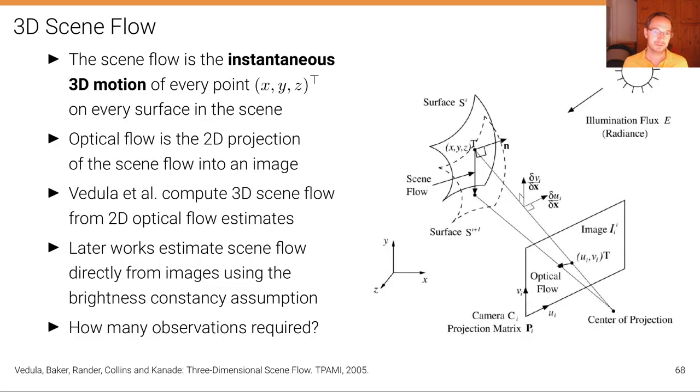The scene flow is the instantaneous 3D motion of every point on every surface in the scene and optical flow is the 2D projection of the scene flow into the image as illustrated here. This is a figure I took from this paper from Vedula et al.